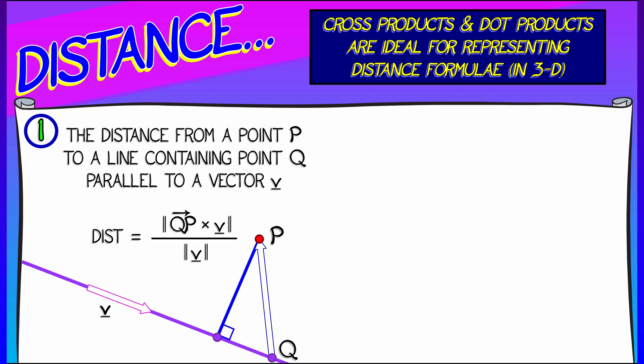Then, that orthogonal distance can be expressed very compactly using the cross product of the vector qp with the vector v. If you take the length of that cross product and normalize by the length of v, or you could forget that altogether if v was a unit vector, then that length of that cross product normalized is the distance from the point to the line. Wow, that's a really simple expression.